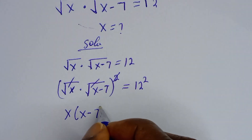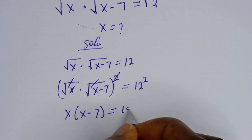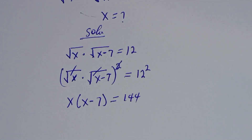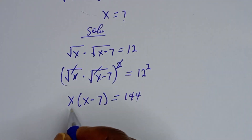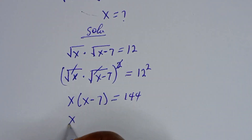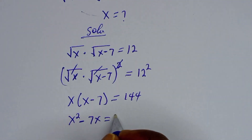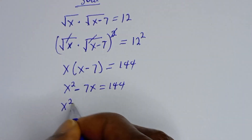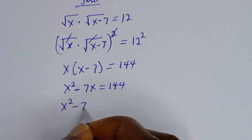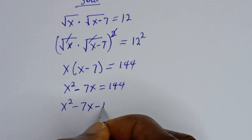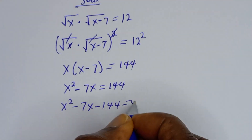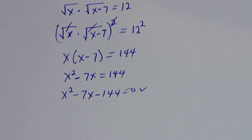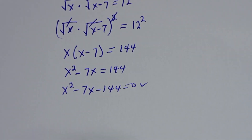s times (s minus 7) is equal to 144. Let's open the brackets: s squared minus 7s is equal to 144. Then s squared minus 7s minus 144 is equal to 0. This is a quadratic equation. Let's solve this using the factorization method.